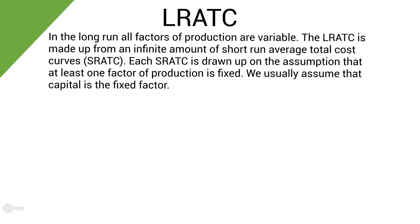Let's start by looking at the long-run average total cost curve. In the long run all factors of production are variable. The long-run average total cost curve is made up from an infinite amount of short-run average total cost curves. Each short-run average total cost curve is drawn up on the assumption that at least one factor of production is fixed. We usually assume that the fixed factor of production is capital.